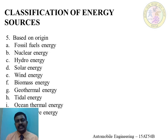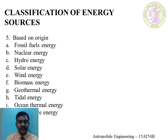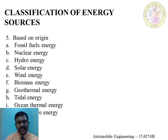The last classification is based on origin — how the energy originated. Examples include fossil fuel energy, nuclear energy, hydro energy, solar, wind, biomass energy, geothermal energy, tidal energy, and ocean thermal energy. In this subject, topics like solar energy, wind energy, and alternative fuels are studied. That concludes the classification of energy sources — five types in total.